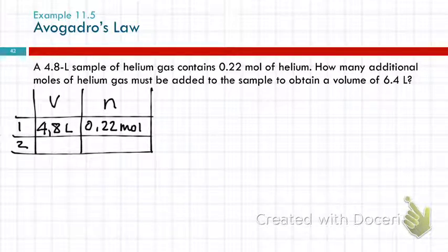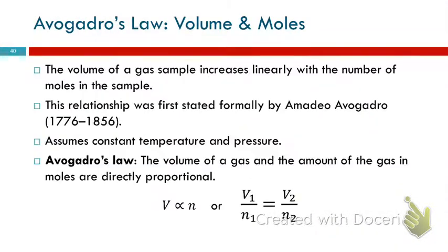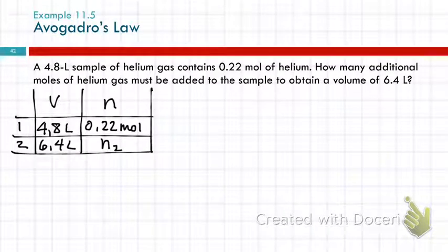How many additional moles to get 6.4 liters. So that's our other volume. So we've got our little table here with boxes filled in, and we're missing one box, so we'll call this box n2 because it's in column n and row 2. We look at these variables up here. We need the law that has those variables in it. So I just want to make sure I write it the same way that it's written there.